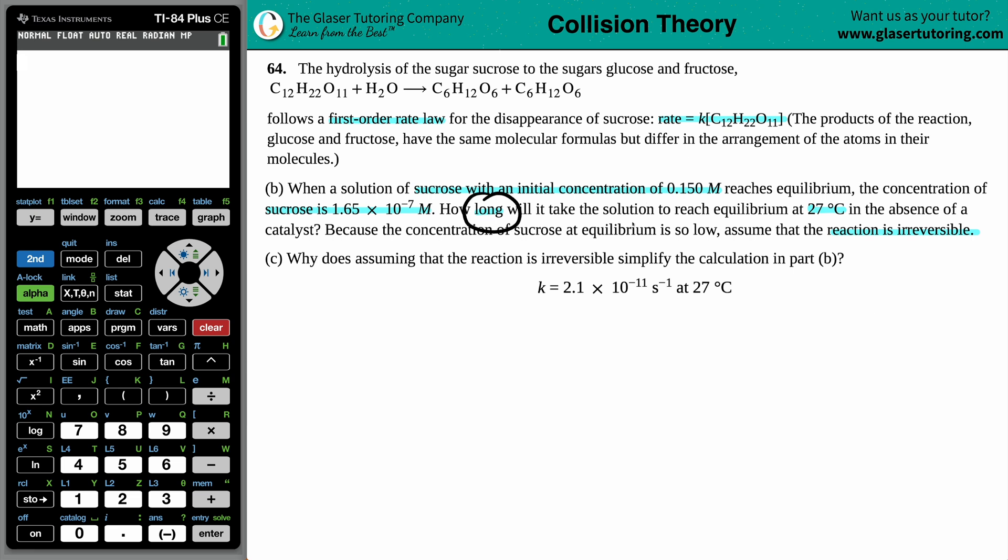For B, they're asking, how long will this solution take to reach equilibrium? We know that we have an initial C12H22O11, that's the sucrose. We know initially that we're starting off with a 0.150 molarity solution. And then, as time goes on, that concentration of the sucrose, C12H22O11, will now, finally, or at equilibrium, will reach a value of 1.65 times 10 to the negative 7th molarity.